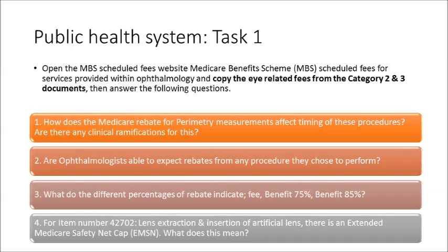Then answer the following questions. One: how does the Medicare rebate for perimetry measurements affect the timing of these procedures, and are there any clinical ramifications for this? Two: are ophthalmologists able to expect rebates from any procedure they choose to perform? Three: what do the different percentages of rebate indicate — fee, benefit 75%, benefit 85%?